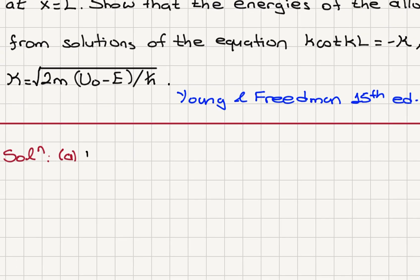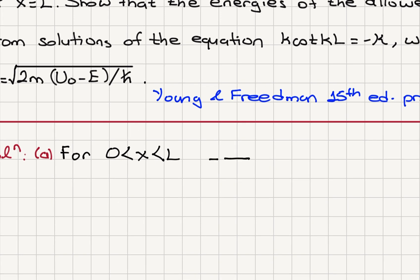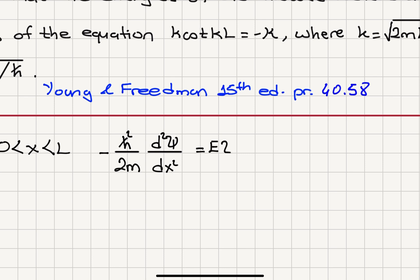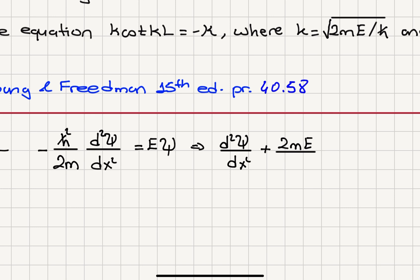If we write Schrödinger's equation for the range of x values between 0 and L, this is −ℏ²/2m times the second derivative of the wave function d²ψ/dx². Because the potential is equal to 0, there is no potential term. This equals energy times ψ, which can be written as d²ψ/dx² + (2mE/ℏ²)ψ = 0.